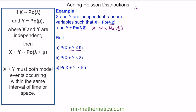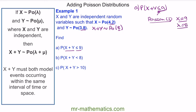For part A, the probability of x plus y being less than or equal to 9. Because it's less than or equal to 9, we can use the Poisson CD function on our calculator, since this is a cumulative distribution — we covered that in a previous video. On our calculator, we use Poisson CD, choose x equal to 9, and our parameter lambda equal to 8. This gives us a probability of 0.7166.